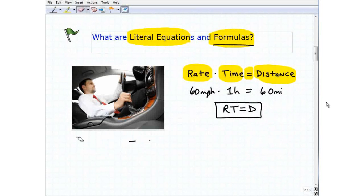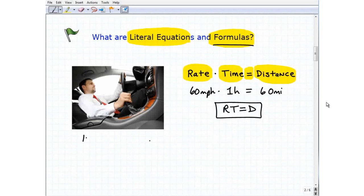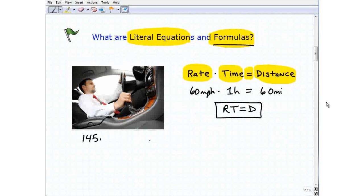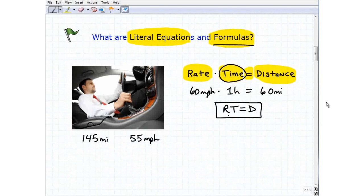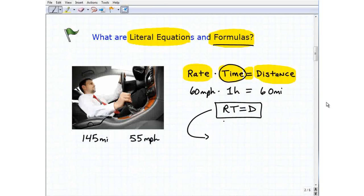Now, what if I gave you another problem? I said I want to know how long it took this guy. He went, let's say, 145 miles, and he was doing, say, 55 miles per hour. How long did it take him? So now I would be interested in time. So to figure that out, I would go ahead and plug this information into my formula. But really what you want to be doing is you want to rewrite this same formula in terms of t, in terms of time, because this is what you want. This time we're looking for distance, our first problem.